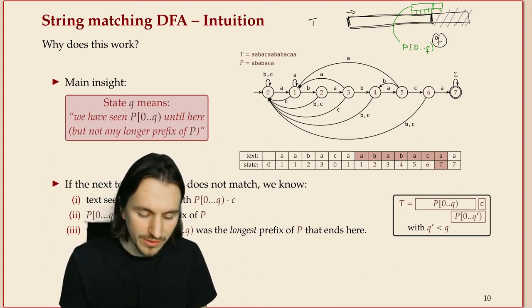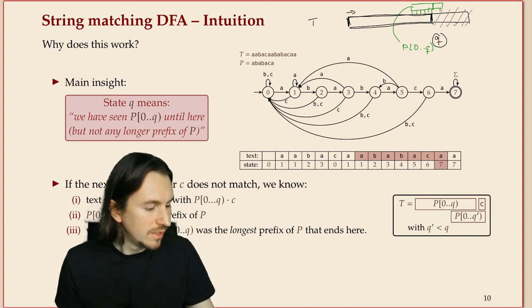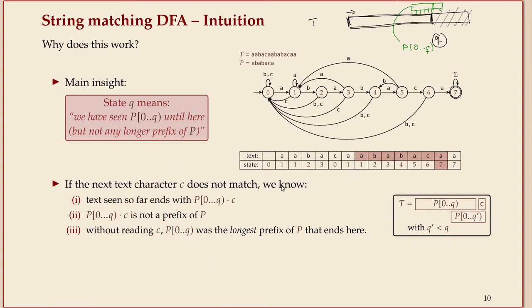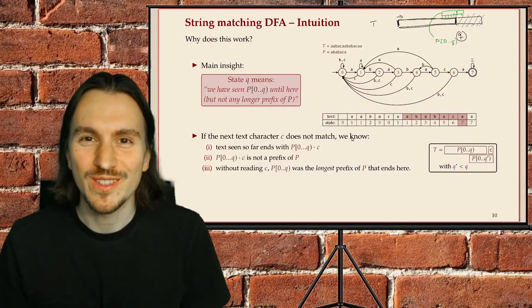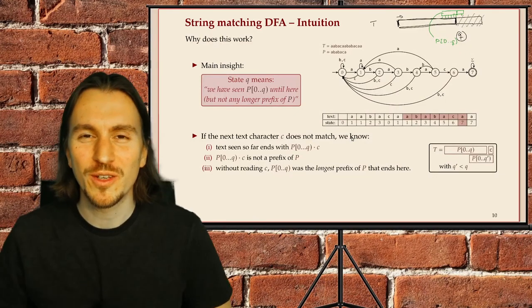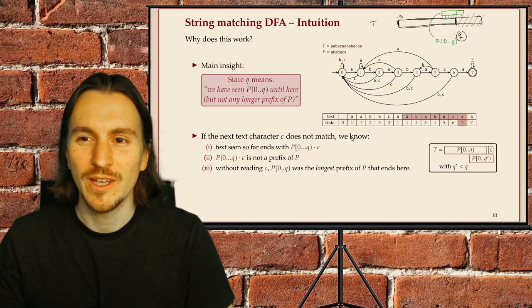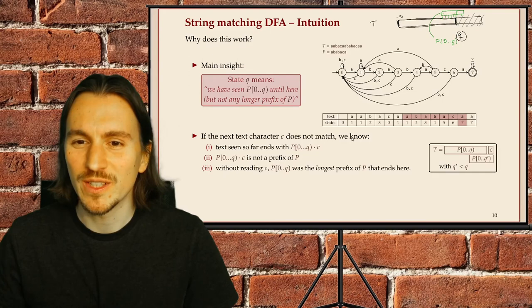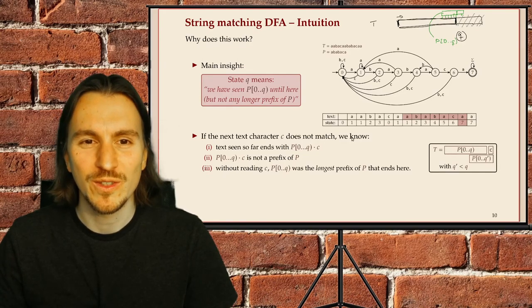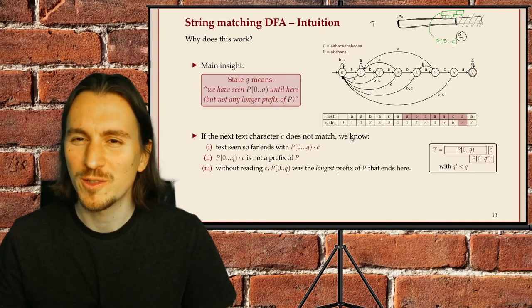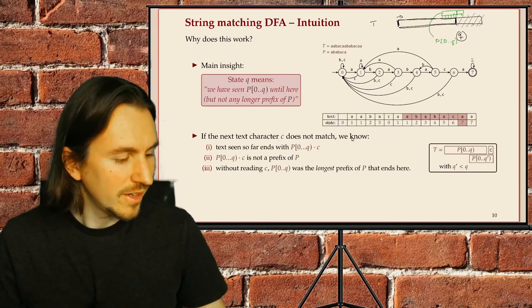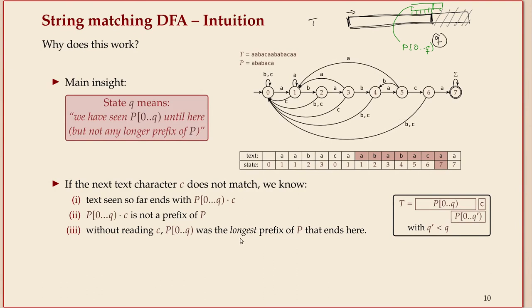That is what is meant by this invariant and how this automaton is constructed. Why can something like this work? The puzzling thing is that this automaton is only constructed knowing the pattern - it doesn't know the text - and the same automaton works for all texts. That might be a bit surprising. How is this possible? Because if the automaton only knows the pattern, how can it react correctly to all possible texts? The answer is in this observation here.